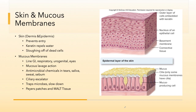In the mucous membranes, we have a lot more activity and defense. Mucous membranes are considered the most common portal of entry for pathogens — that would be how pathogens get into our system. We have mucous membranes that line our gastrointestinal tract, the urogenital tract, the respiratory tract, our eyes and mouth.